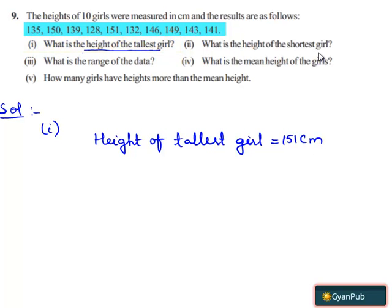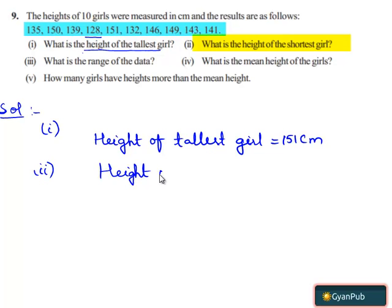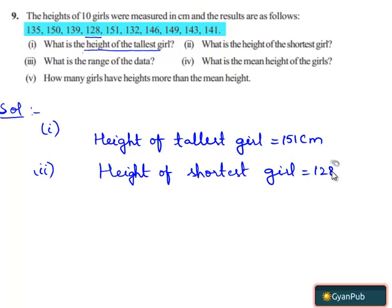When we move to the second part: what is the height of the shortest girl? When we see the above heights of the 10 girls, we find that the height of the shortest girl is equal to 128 cm.